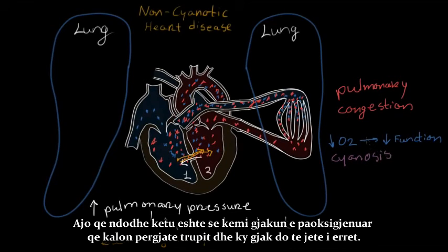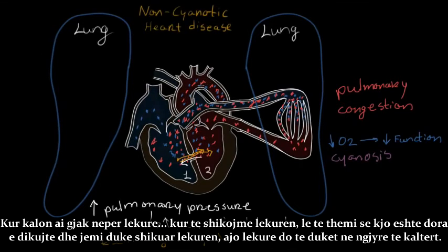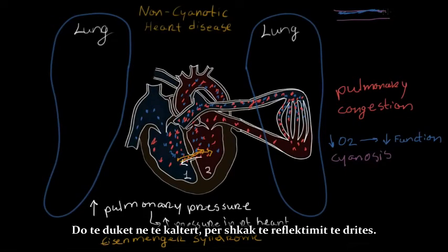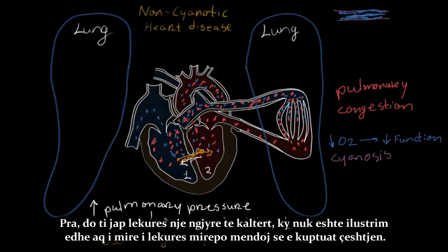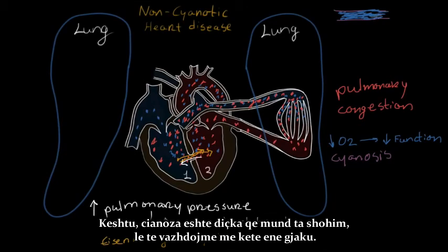One of the ways that we see this is with a sign that we call cyanosis. What happens here is basically you have this deoxygenated blood going throughout the body, and that deoxygenated blood is gonna be darker. And when it goes through the skin — let's say this is someone's hand and you look at the skin — it's gonna give it kind of a bluish color. So it's gonna look a little bluish because of how the light is being reflected, giving the skin a bluish color. So cyanosis is something that we see.